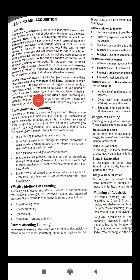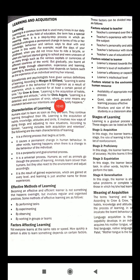According to Crow and Crow, learning is the acquisition of habits, knowledge, and attitude. Of course, we get knowledge by learning and we can change our attitude in a positive way. Crow also states that learning is the detection and correction of error, where an error means any mismatch between our intentions and what actually happens. We can identify the mistakes, rectify them, and perform better without any mistakes.